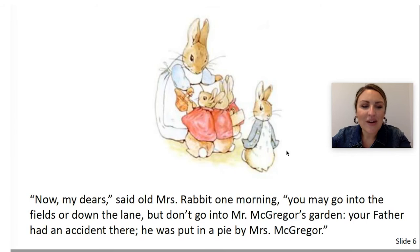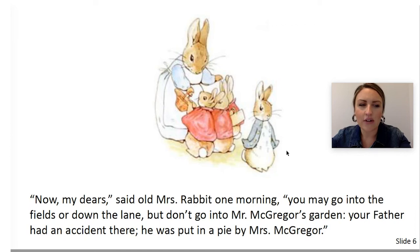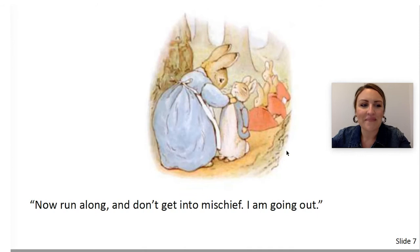Now my dears, said old Mrs. Rabbit one morning, you may go into the fields or down the lane, but don't go into Mr. McGregor's garden. Your father had an accident there, and he was put in a pie by Mrs. McGregor. Mrs. Rabbit is the mother of Flopsy, Mopsy, Cottontail, and Peter. What does Mrs. Rabbit warn her children about? Correct. Mrs. Rabbit warns her children: do not go into Mr. McGregor's garden. Let's keep reading.